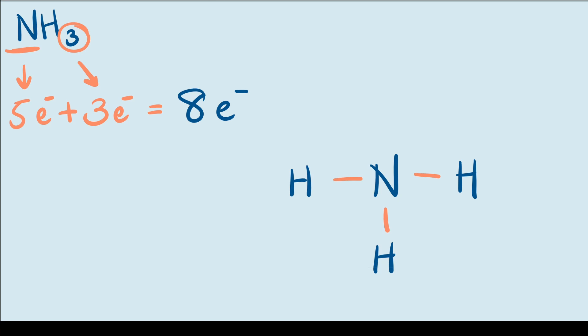After doing this, we can start filling in electrons. We already have three single bonds, which accounts for six valence electrons. So that leaves us with two more that we can add to this molecule. Now the hydrogen atoms have their shells filled because they have two valence electrons from the single bond.